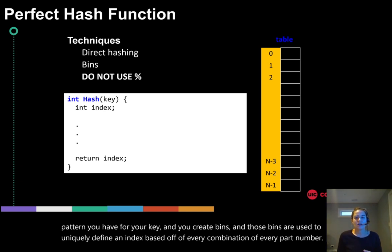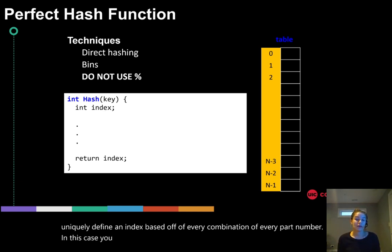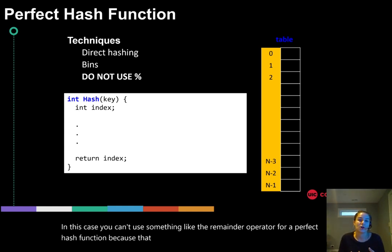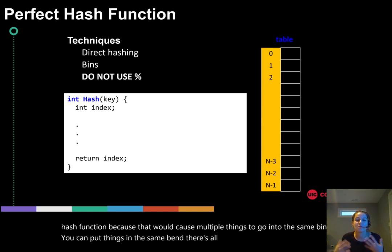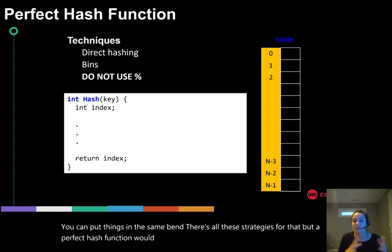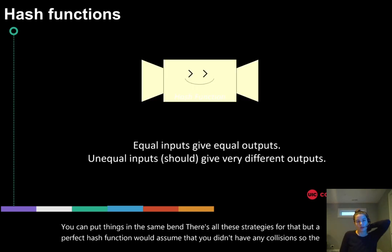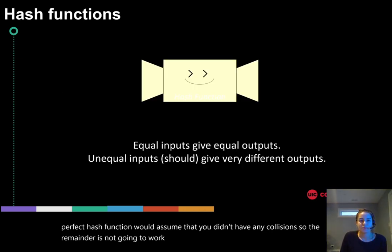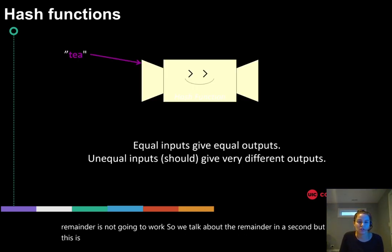In this case, you can't use something like the remainder operator for a perfect hash function because that would cause multiple things to go into the same bin. You can put things in the same bin, there's all these strategies for that, but a perfect hash function would assume that you didn't have any collisions. So the remainder is not going to work. So we'll talk about the remainder in a second, but this is what a perfect hash function would look like.